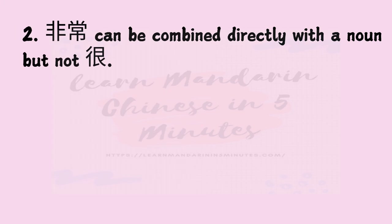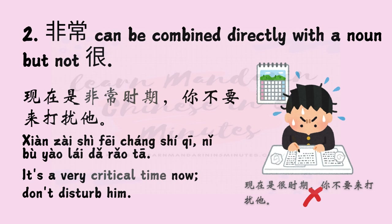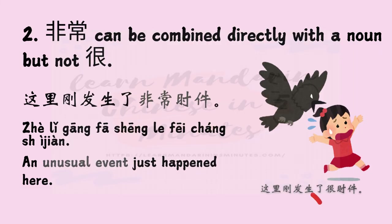Number two: 非常 can combine directly with a noun, but 很 cannot. For example, 现在是非常时期，你不要来打扰他 — It is a very critical time now; don't disturb him. It is wrong to replace 非常 with 很 here; you cannot say 现在是很时期. Similarly, 这里刚发生了非常事件 — An unusual event just happened here. Just like the previous sentence, you cannot change 非常事件 to 很事件.